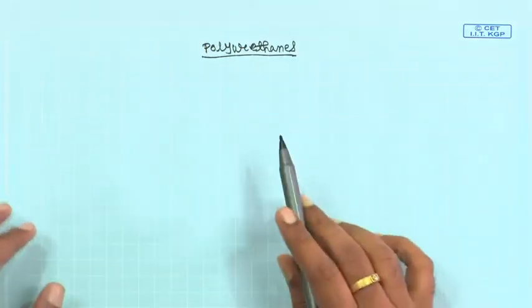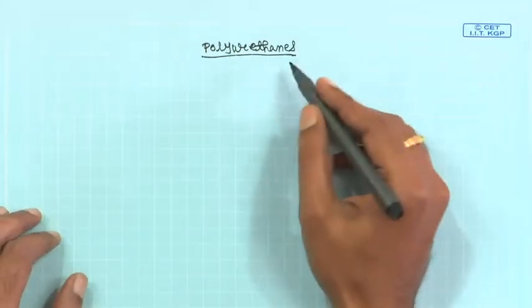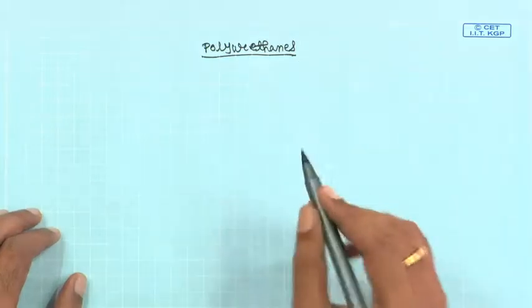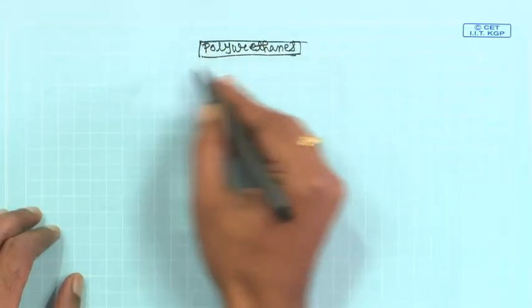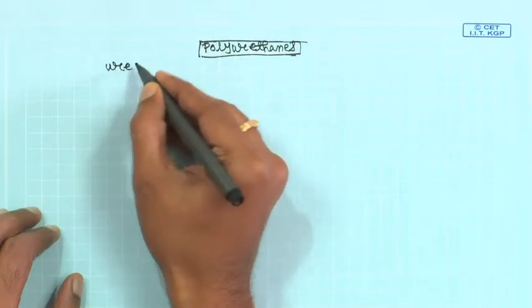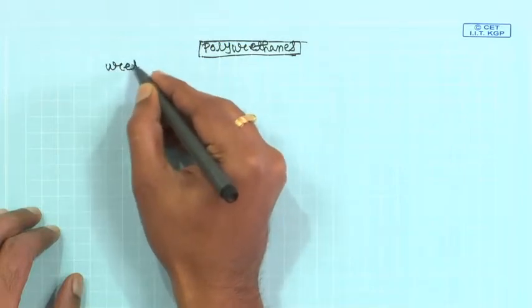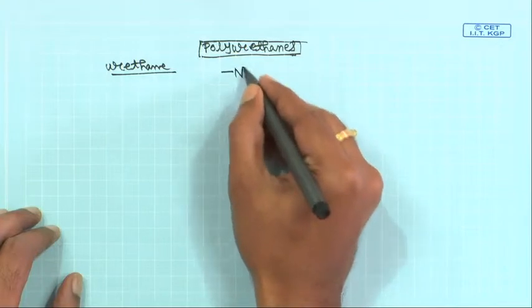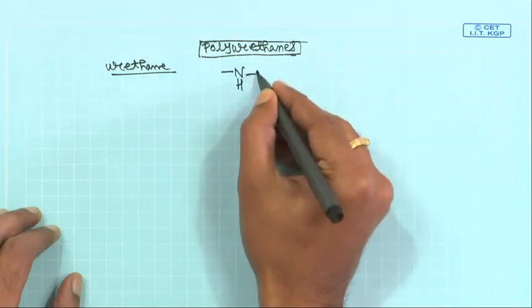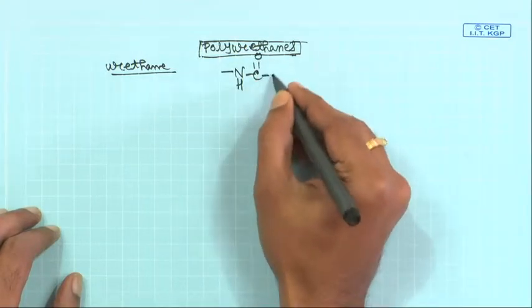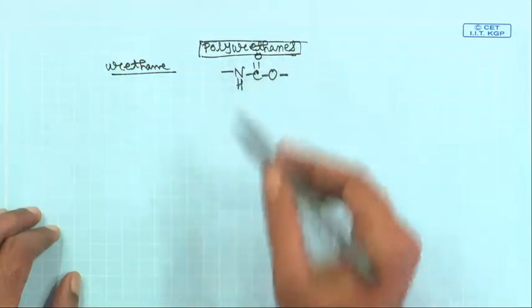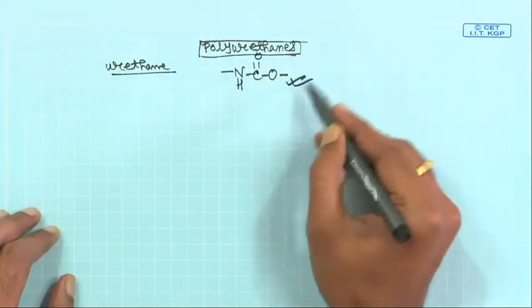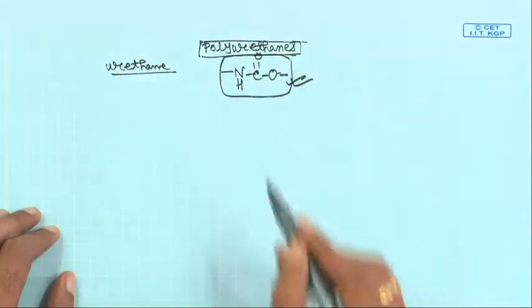Polyurethanes are also important engineering polymers. Polyurethanes contain the urethane functional group — this group is contained in the polyurethane molecules, and this functional group is called urethane.